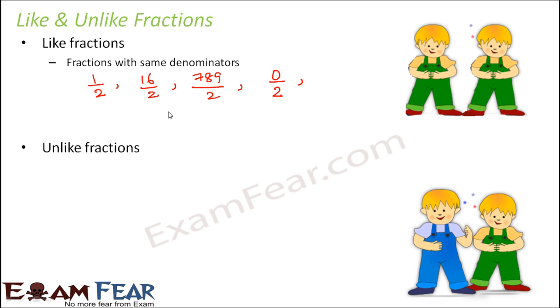Now let us talk about unlike fractions. So what would be unlike fractions? Definitely the opposite, that is fractions with different denominators and that is why they are unlike. So things like 16 by 5, 9 by 8, 1 by 2, 2 by 3, these are all examples of unlike fractions.